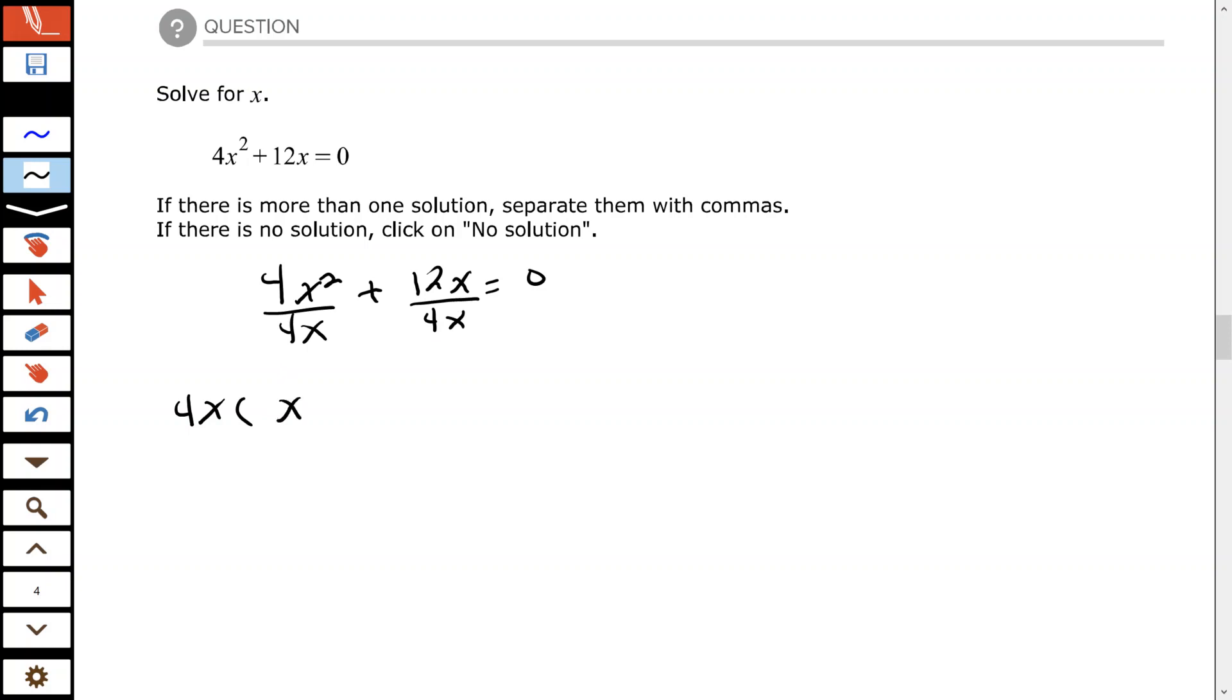So the 4 times x leaves me with x plus 3, so 4x times x plus 3. Now that is completely factored, I want to set each factor equal to zero.